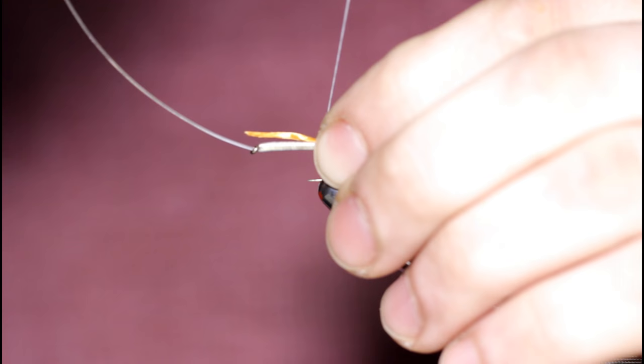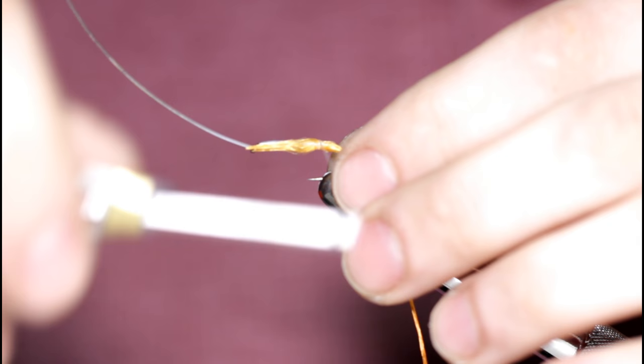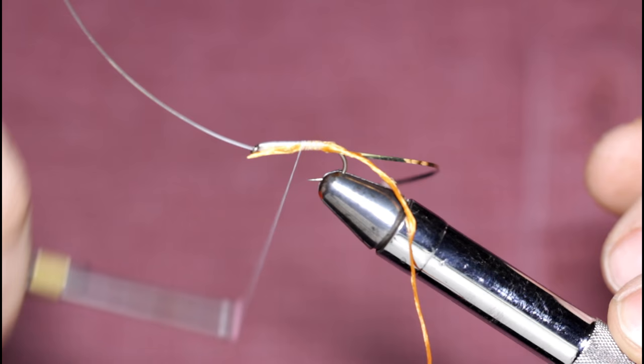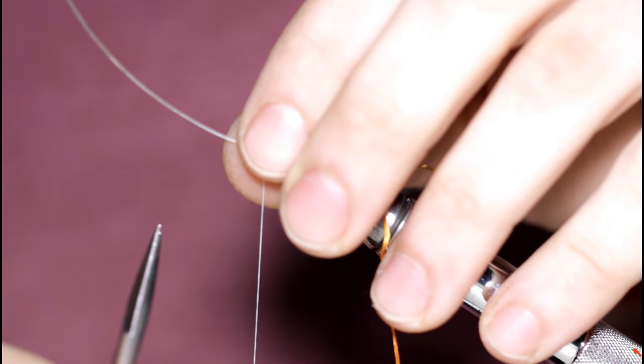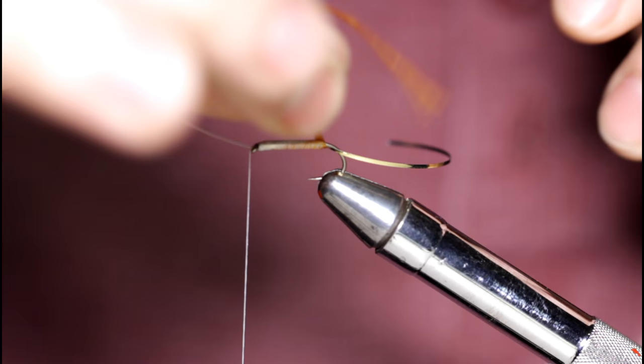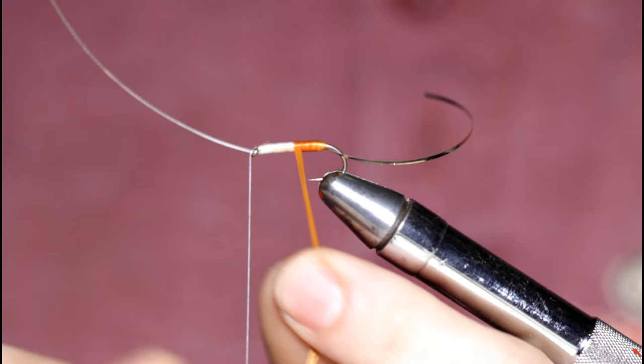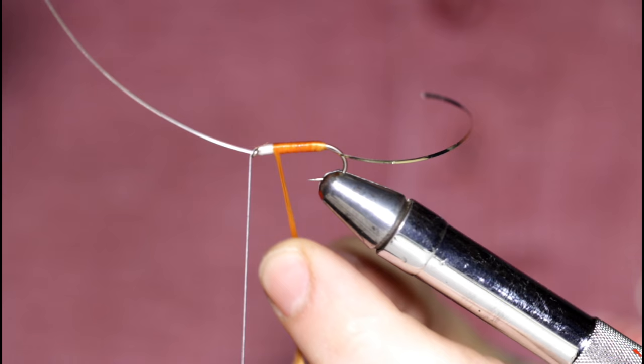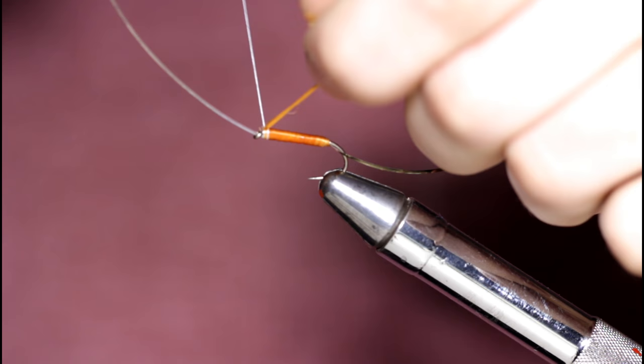Try to get nice even touching turns here if you'd like a smooth body in the end. And I'll just come in and snip this little tag end off here. So next it's time to wrap the floss. I'm just going to get this started. Take touching turns forward.